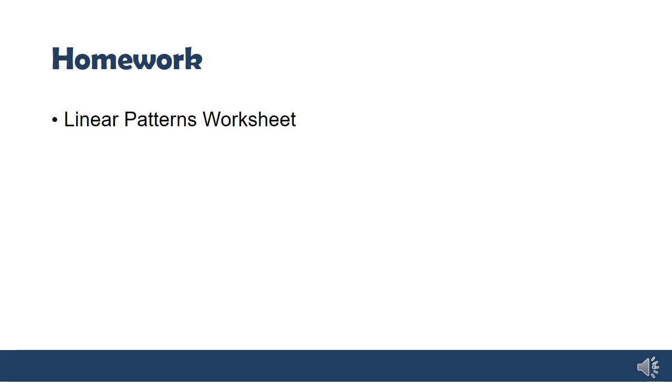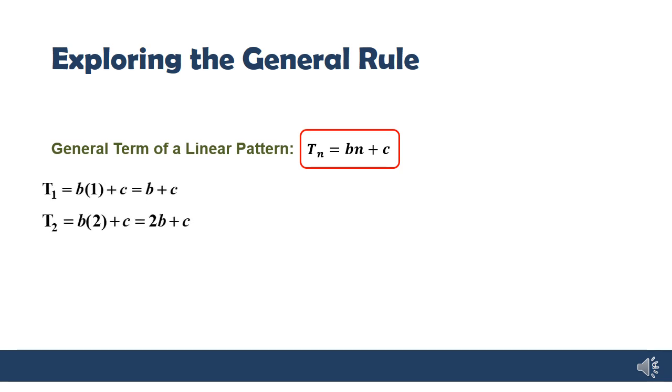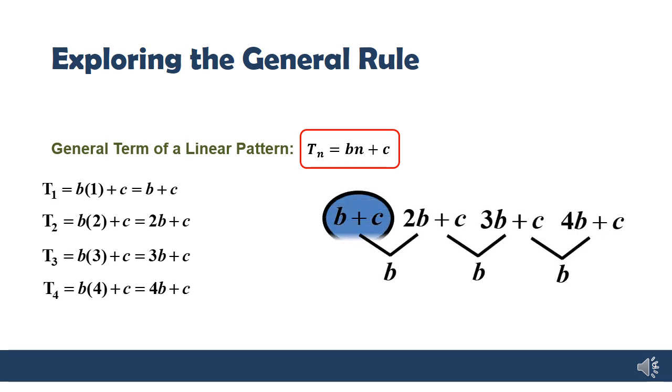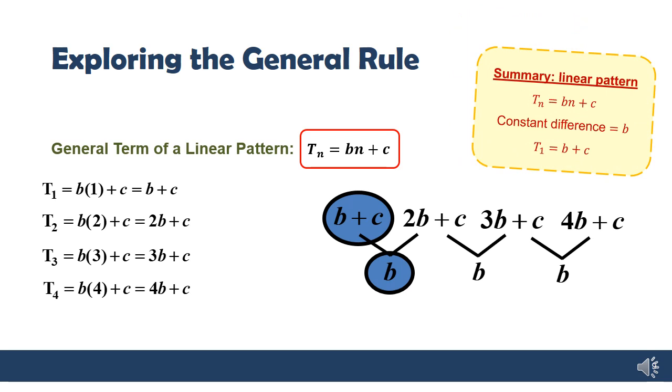Your homework for today is the revision worksheet on linear patterns. Good luck with that. I'll leave the next slide up for a few seconds if you're interested in that alternate method. These notes are an optional exploration of how we derive those formulae for b and c. There's a nice explanation in your textbook under the linear patterns section. I strongly suggest, especially if you're aiming for an A or B this year, that you should understand and follow along with this. Pause the video, take notes, and make sure it makes sense.